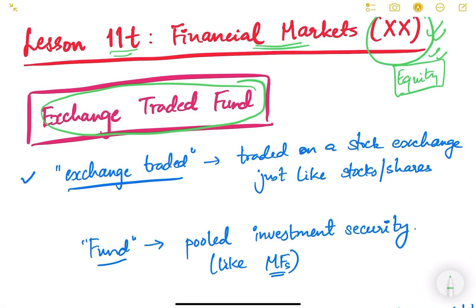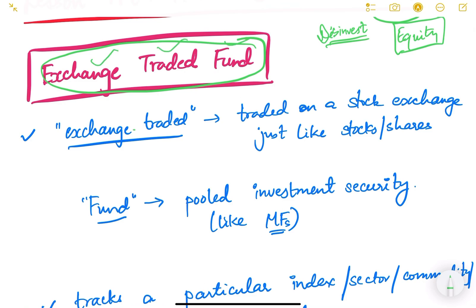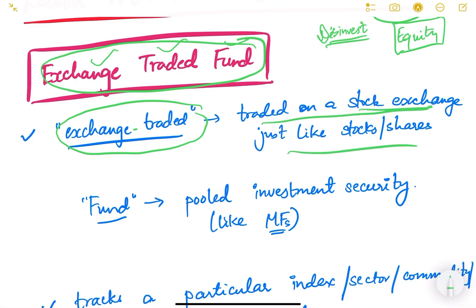You must have heard this term in the context of public finance and fiscal policy when the government wants to disinvest. Let us understand what it exactly means by breaking up the words: 'exchange traded' means it is traded on a stock exchange, just like shares and stocks. On a stock exchange, shares and stocks are traded in real time and their prices fluctuate every second, minute, and hour because trading happens continuously when markets are open. Similarly, exchange traded funds are also traded in real time on the stock exchange.